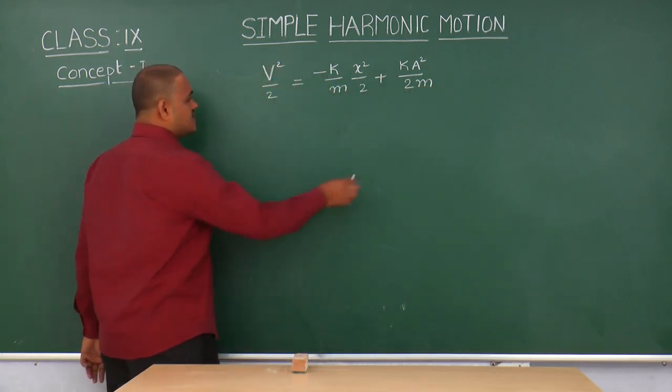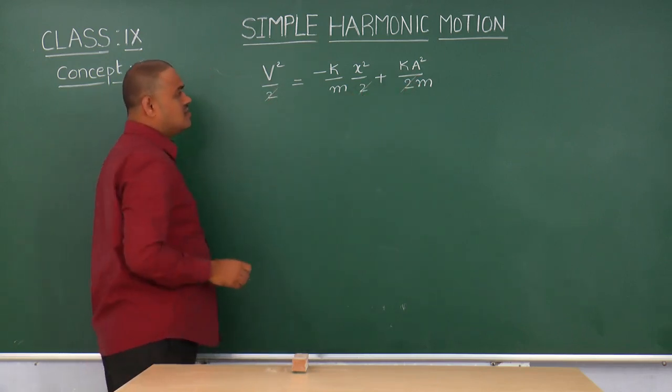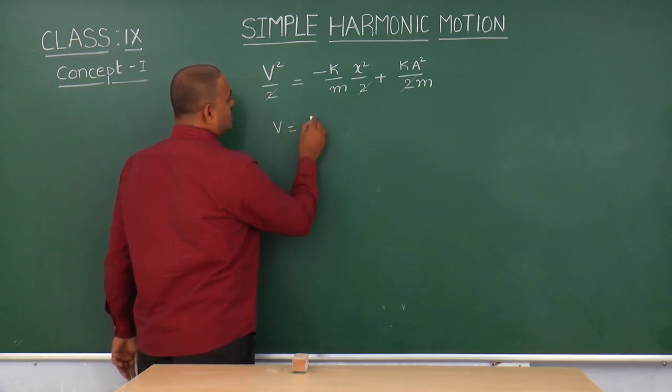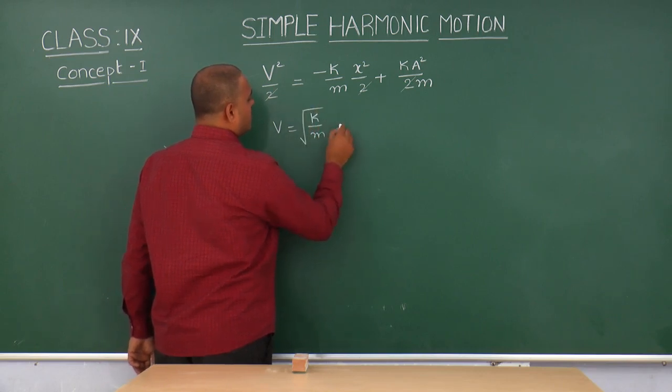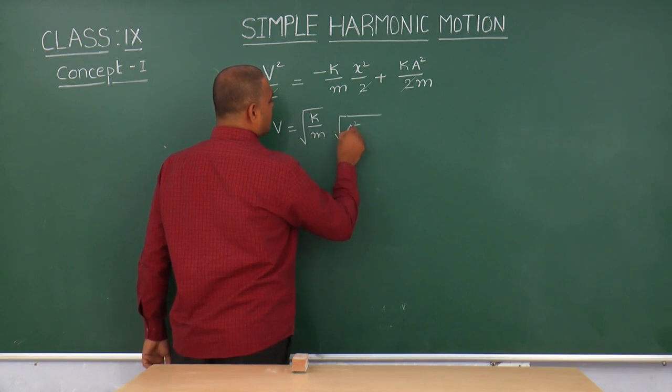Here, cancel this term 2 on both sides. So we will get v is equal to k by m under root into under root a square minus x square.